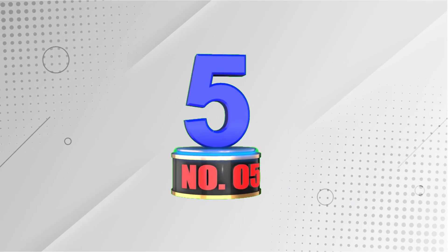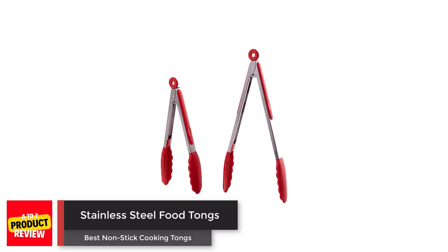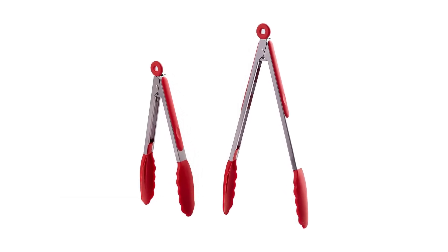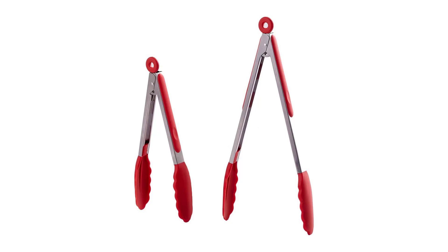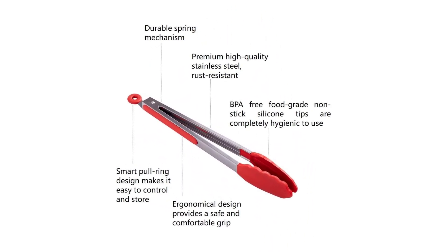Number five: Stainless Steel Food Tongs. Hermware tongs are a set of two heavy-duty kitchen tongs made of high-quality stainless steel. The pull-ring locking system makes them easy to store and control, while the ergonomic design ensures a safe and comfortable grip.